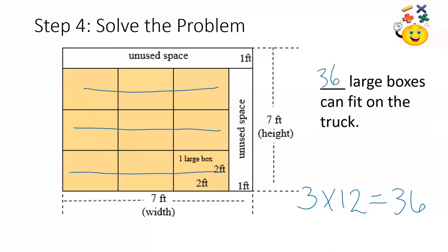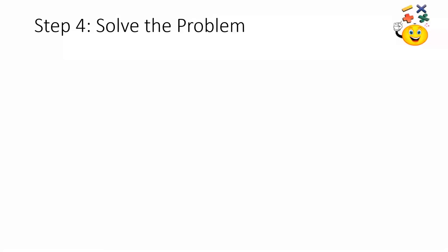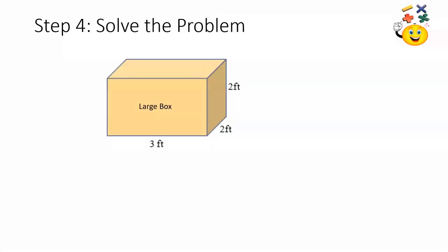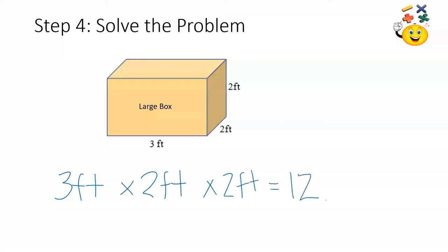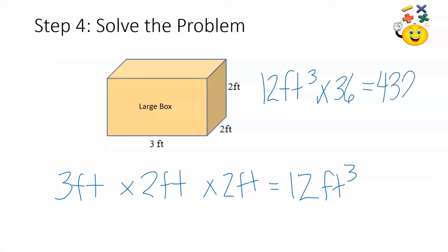Three layers times 12 boxes equals 36 boxes that can fit on the truck. Now that I know that 36 boxes can fit on the truck, I need to find the combined volume of those boxes. I can find the volume of one box by solving the equation 3 feet times 2 feet times 2 feet, which gives me a volume of 12 feet cubed. To find the combined volume, I need to multiply 12 feet cubed times 36 boxes, which equals 432 feet cubed.